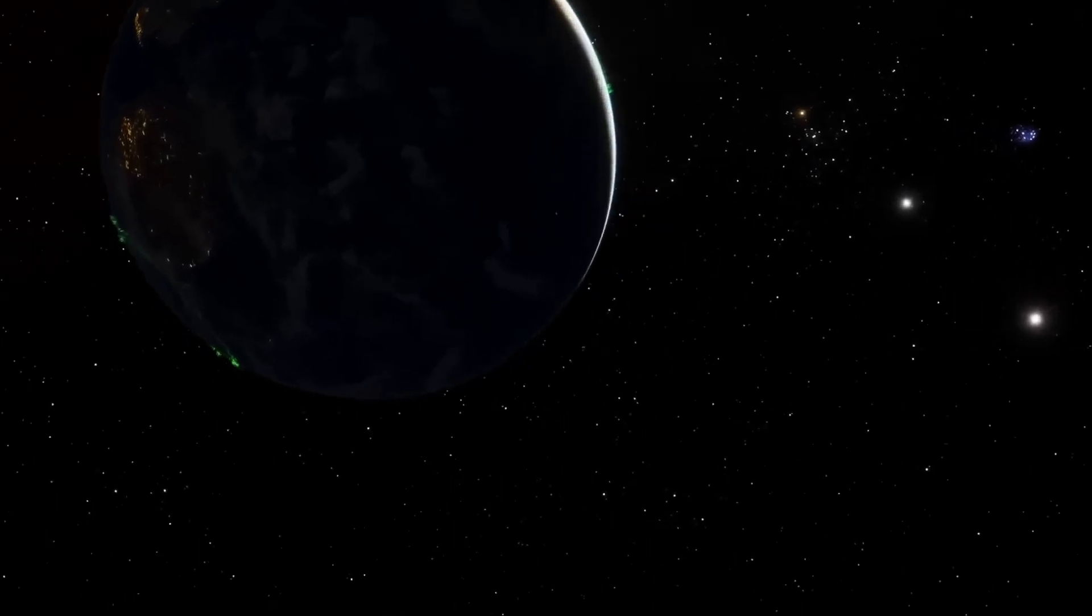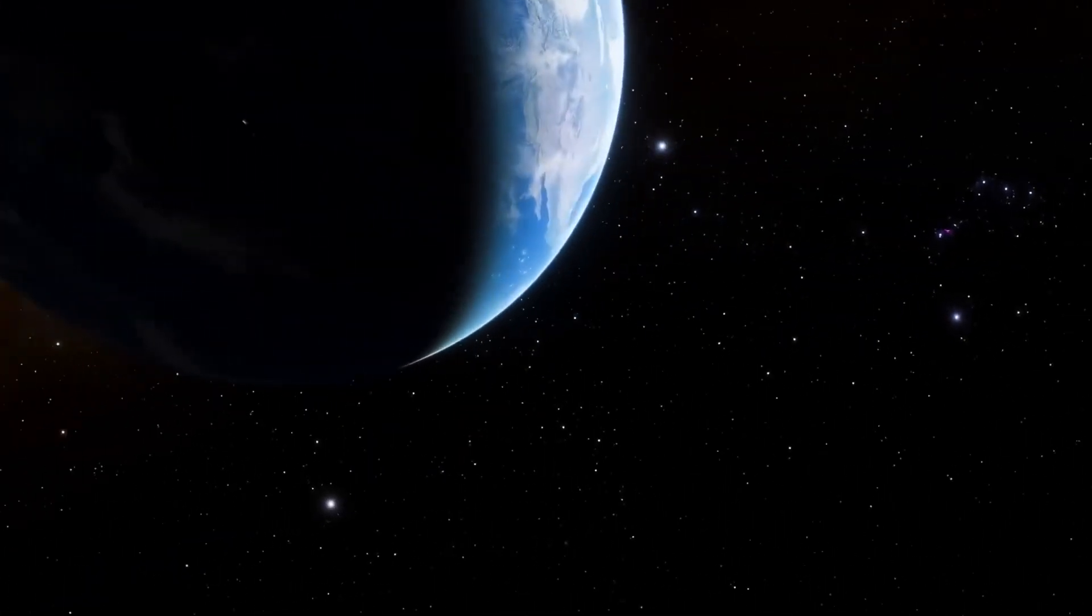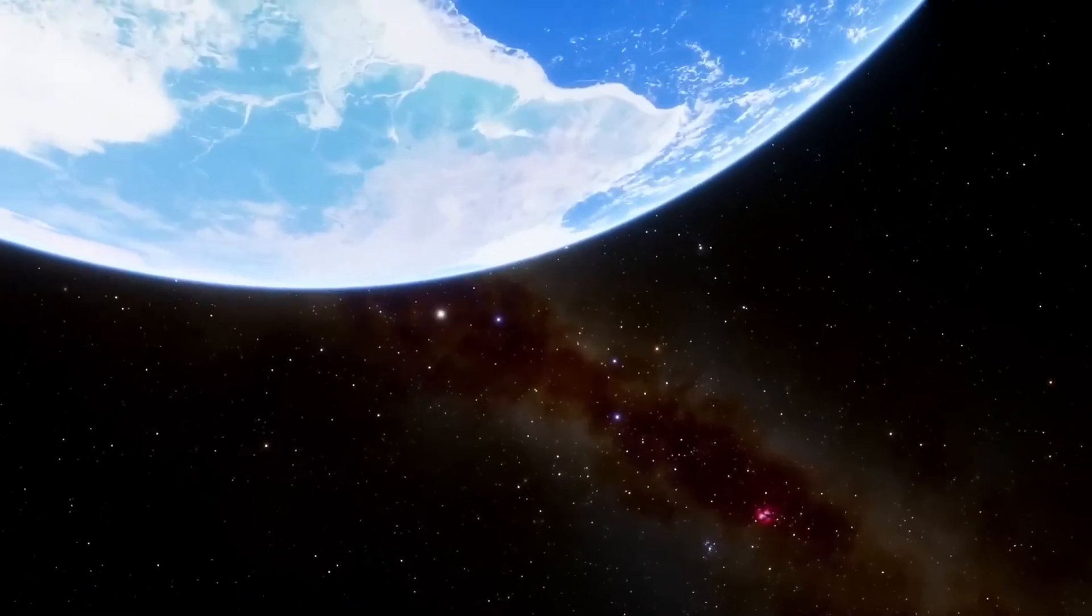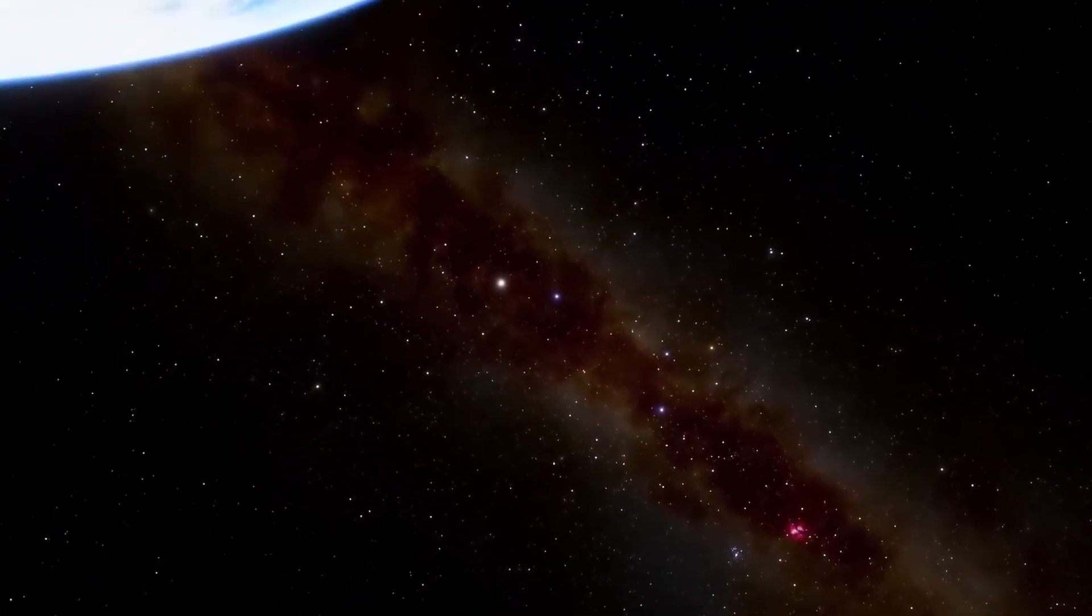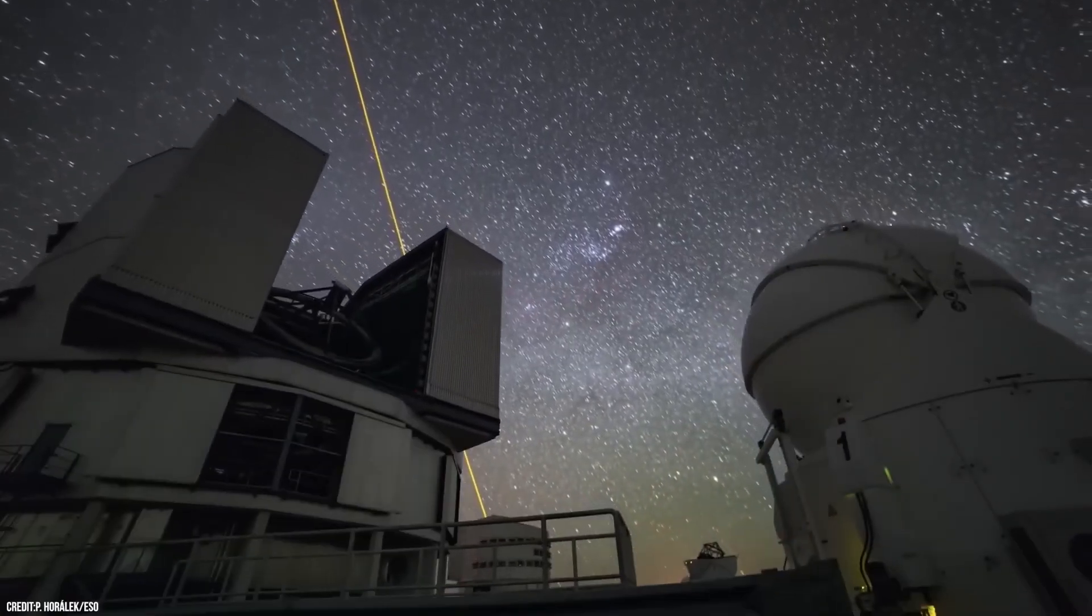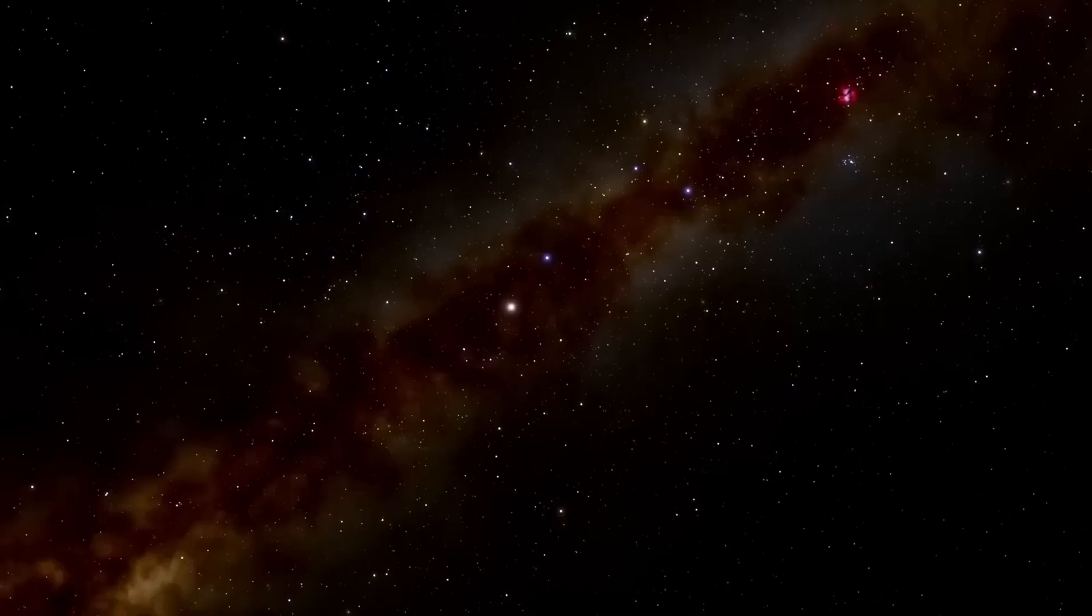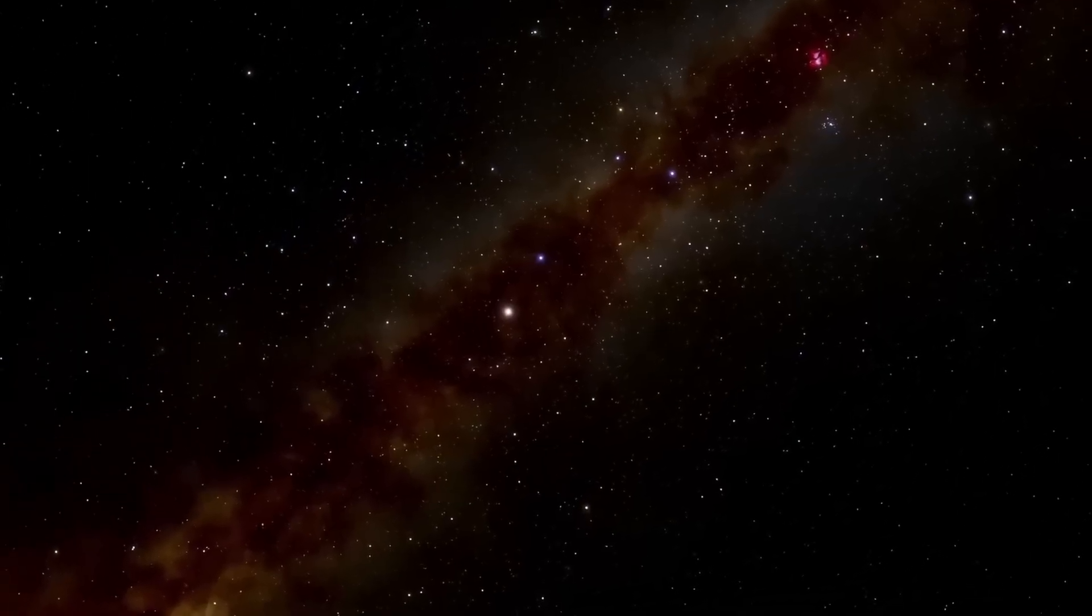Beyond the confines of our solar system lies the vast expanse of interstellar space. The nearest star to our sun is Proxima Centauri, located about 4.24 light-years away. A light-year is the distance that light travels in one year, which is roughly 9.5 trillion kilometers.